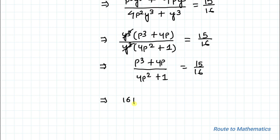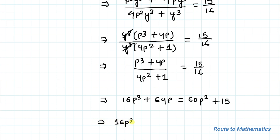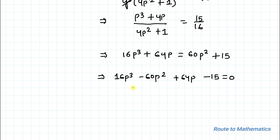In the next step, let's do cross multiplication. We have 16p³ + 64p equals 60p² + 15. Taking all terms to the left-hand side: 16p³ - 60p² + 64p - 15 equals to 0.